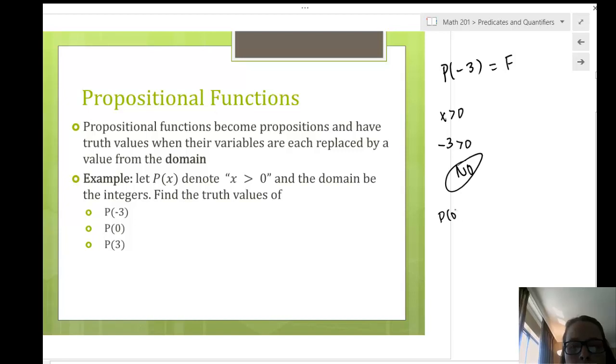P of 0, let's plug that in to see what happens. Is 0 greater than 0? No way it's not, it's equal, right? If we had changed this predicate to be x greater than or equal to, what would be the truth value there? Discuss, discuss, discuss. So, P of 0 is false.